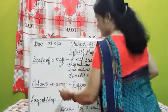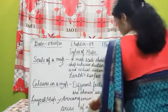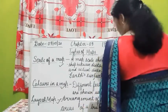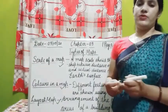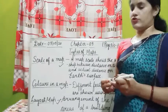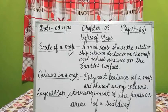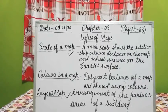Your next topic is layout of a map. The arrangement of the parts or areas of a building shown on the map with symbols is known as the layout of a map. A layout map shows us the various sections of a historical site at one glance.